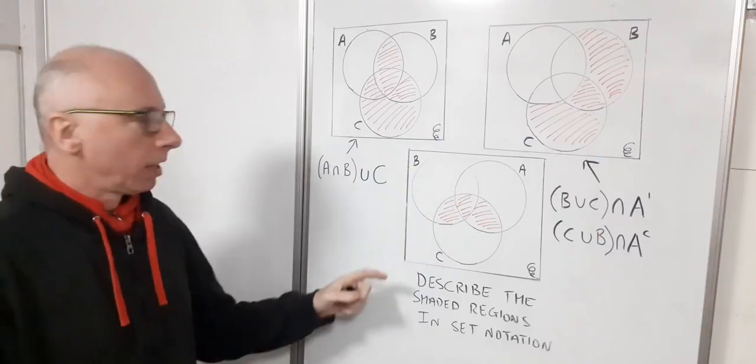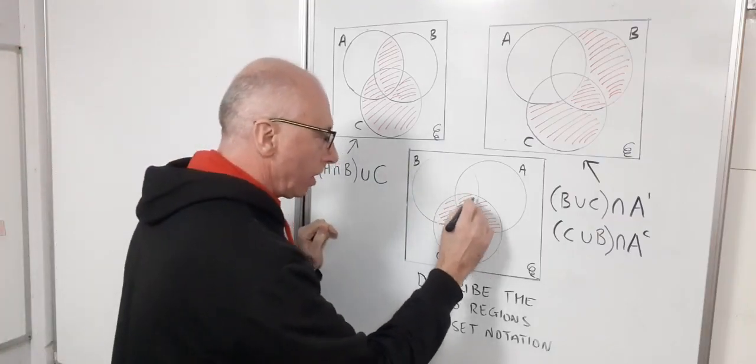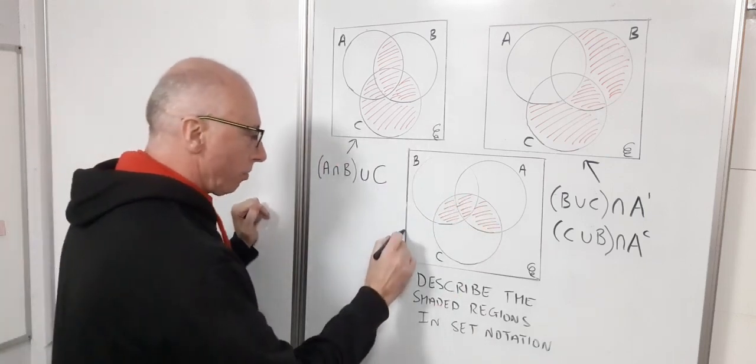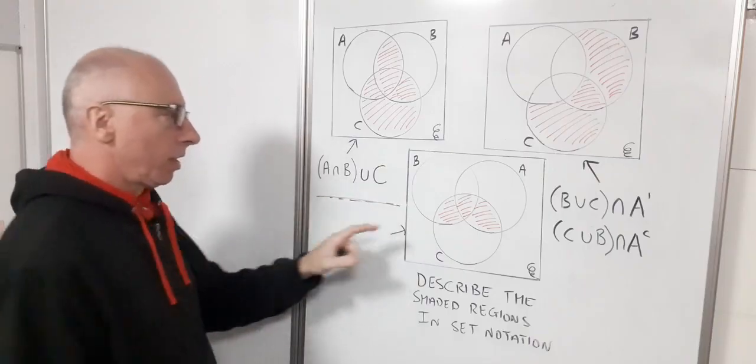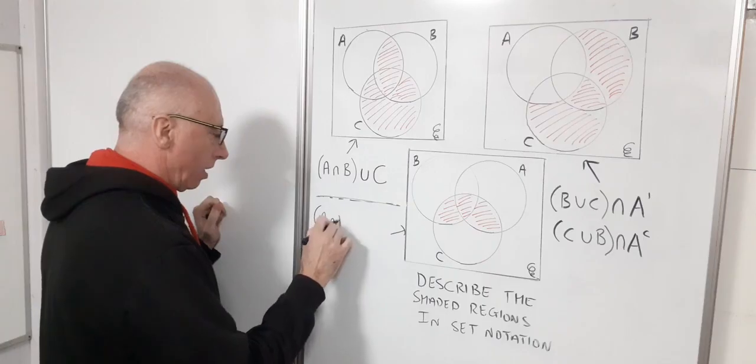Now what about this one? Here I've got all of the intersection, so A intersection B intersection C. Let's write this one over here, keep it separate from this one. I've got A intersection B intersection C, so I can just write that like that.